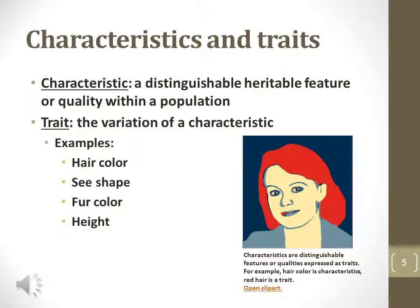Characteristics, sometimes referred to as characters, are observable qualities of an organism. A trait is an observable quality controlled by genes — for example, hair color and height in humans, seed shape in peas, and fur color in dogs.